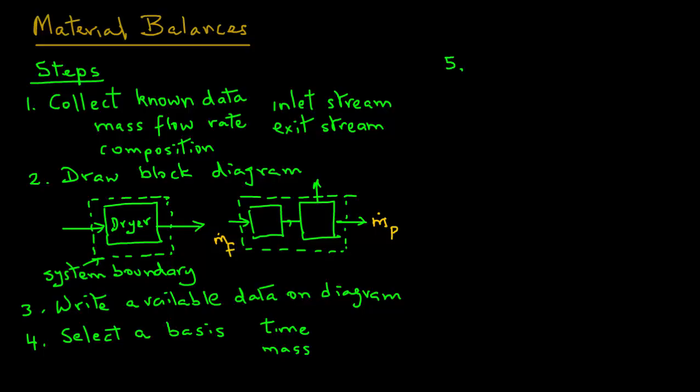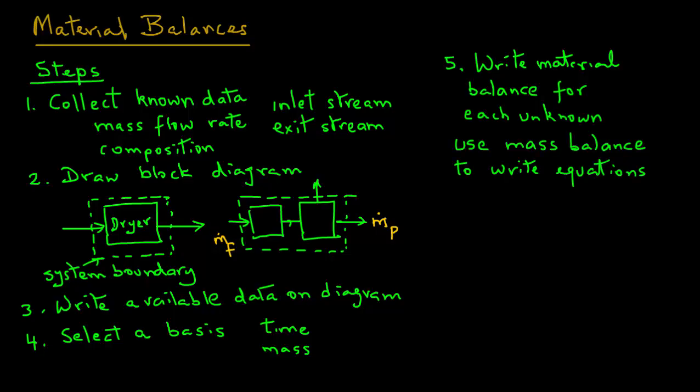Five, we will use the mass balance equation to write our material balances for each of the unknown that are there in the problem. Since we will be solving simultaneous equations, for each unknown we will need an independent material balance equation. Six, we will then solve our material balances which will be in terms of simultaneous equations and from there we will determine the unknown or the unknowns in the problem.